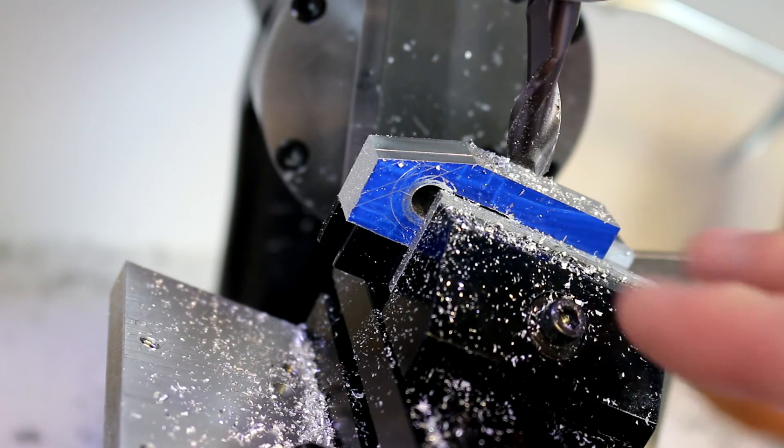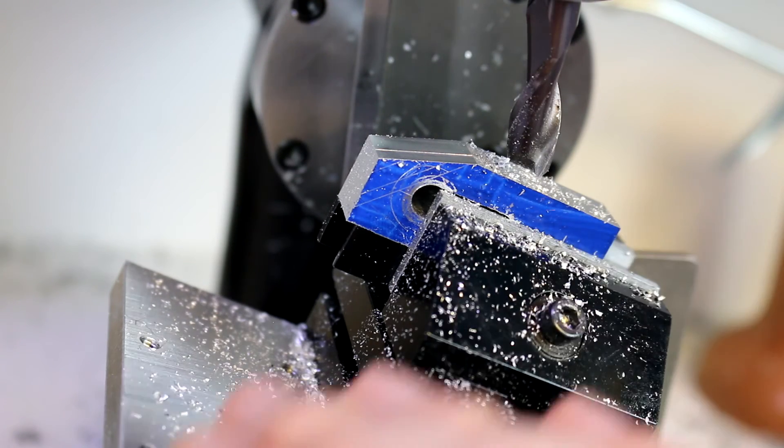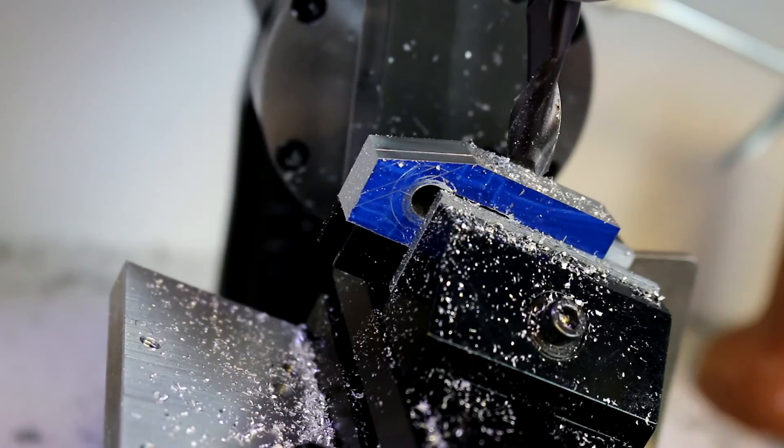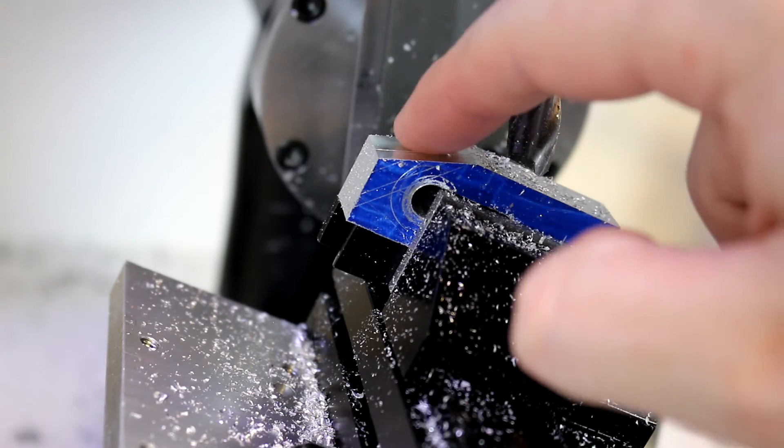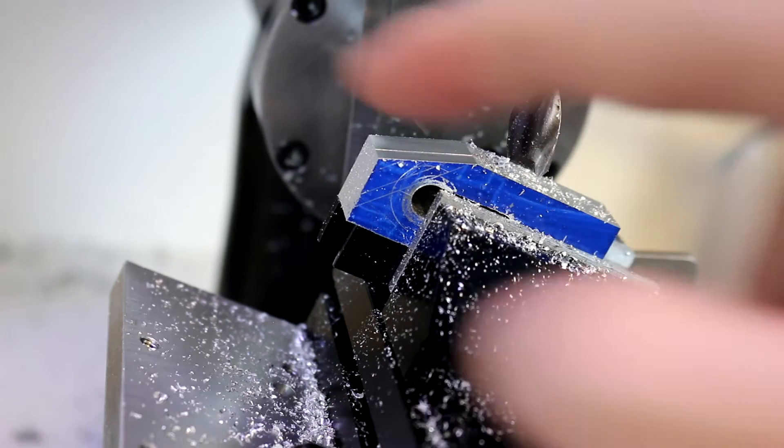And you should be careful when you're doing this to make sure that you get this table level front to back because it's fairly easy to torque it a little bit, which I have done here. So I'm getting a little bit of a step when I mill side to side.